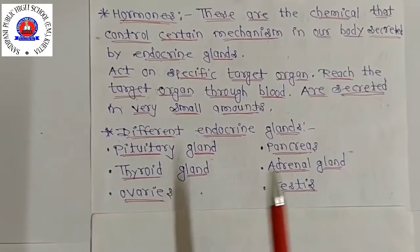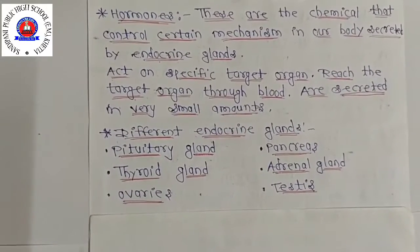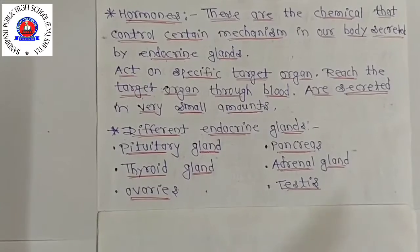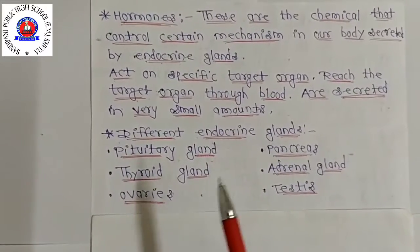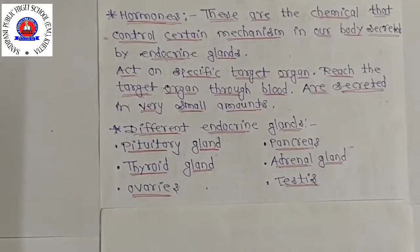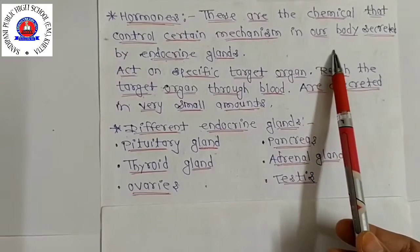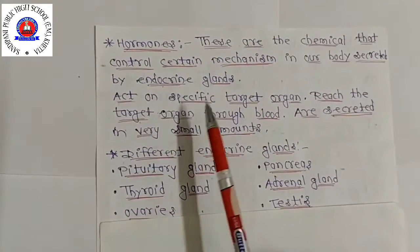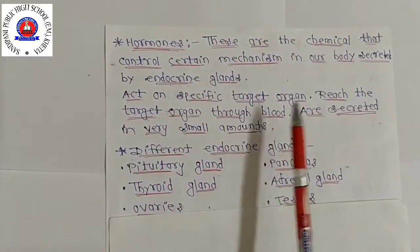Hormones are chemical substances secreted in very small amounts by specialized tissue in the body called endocrine glands. These hormones coordinate the activities of living organisms and also their growth. They control certain mechanisms in our body and are secreted by endocrine glands. Hormones act on specific target organs, reaching them through the blood.